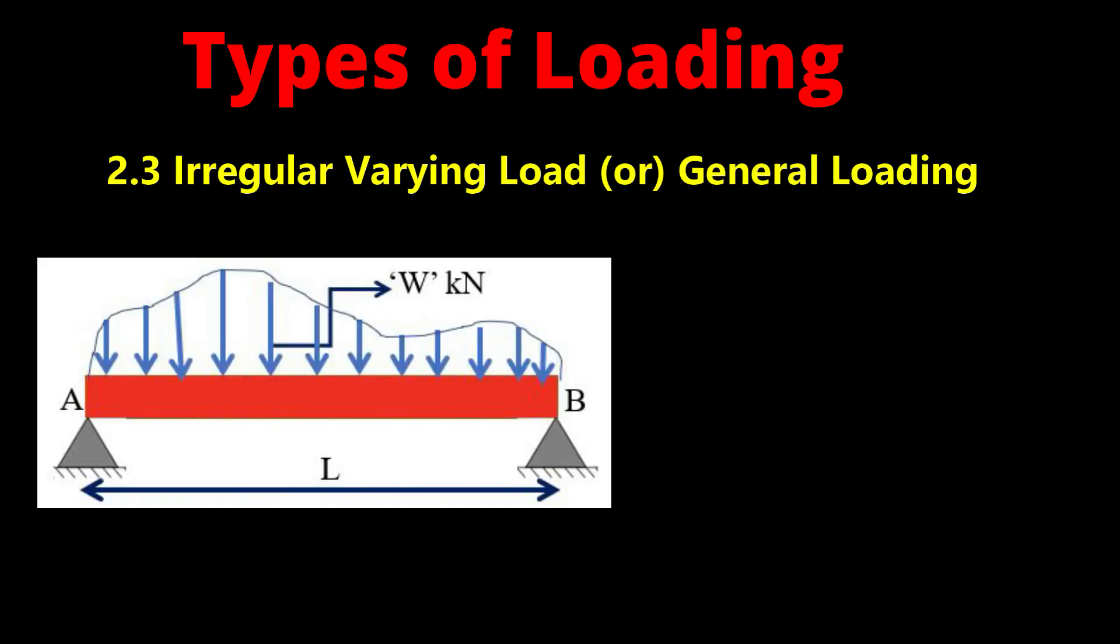The third type of distributed load is irregular varying load, also called general loading. In this, the load intensity variation is not uniform and linear. For simplicity in analysis, such loadings are replaced by a set of equivalent point loads.